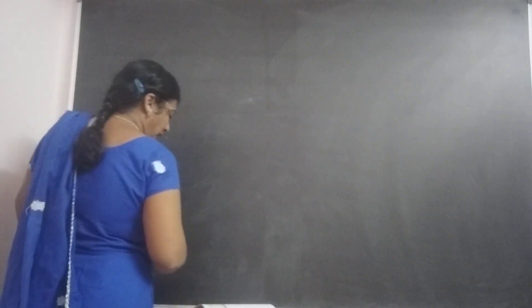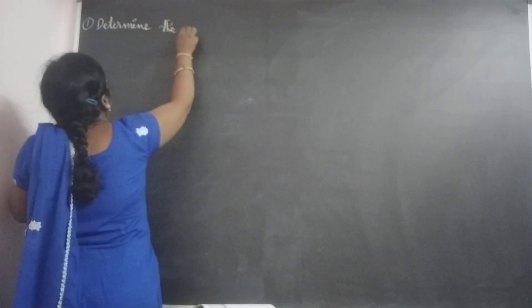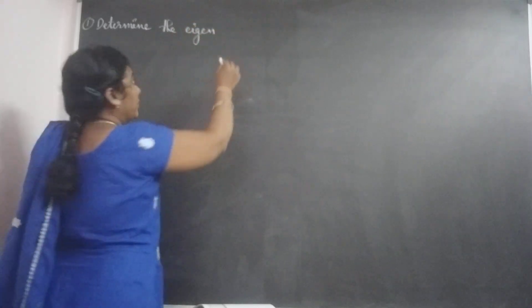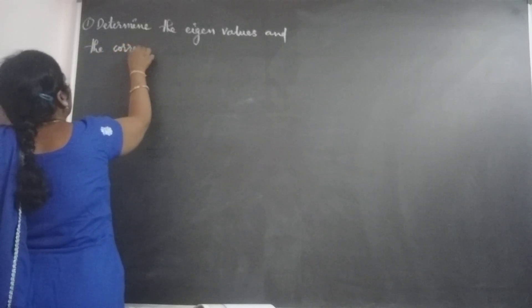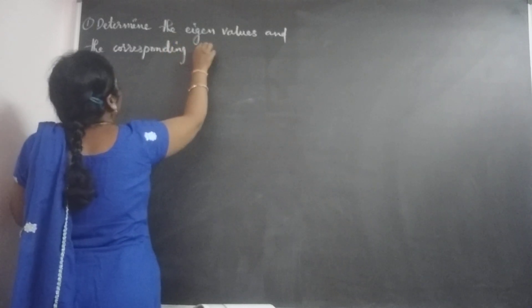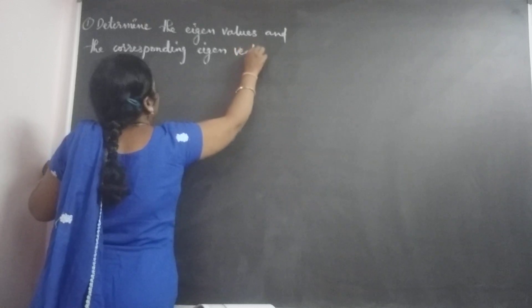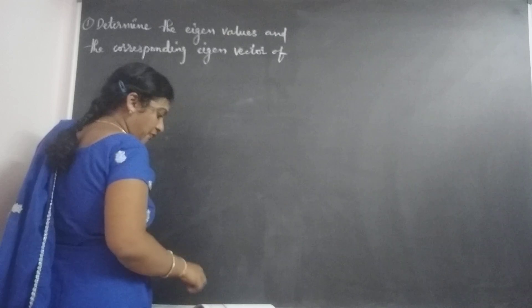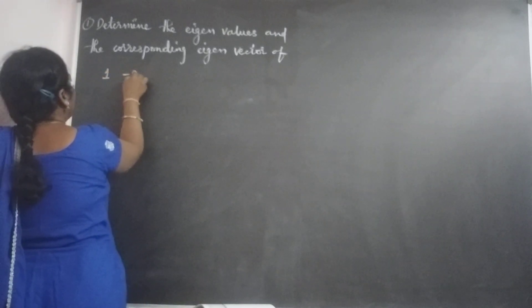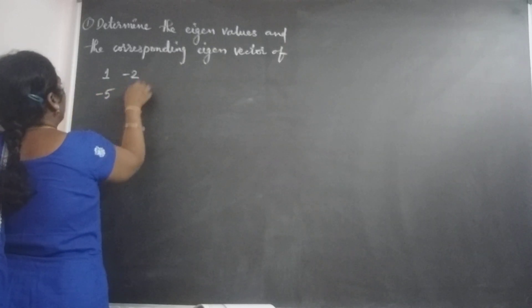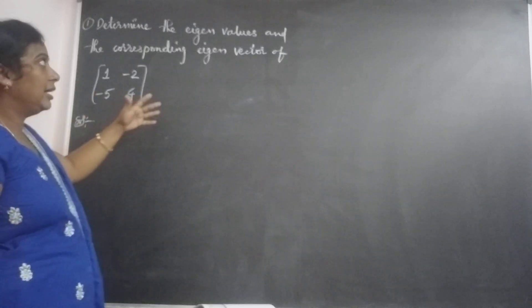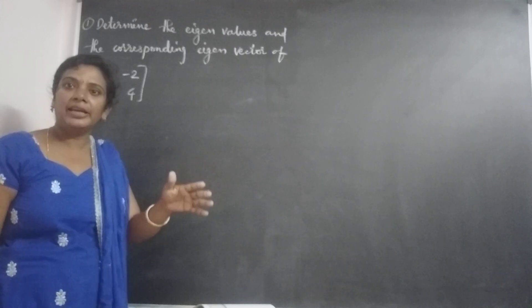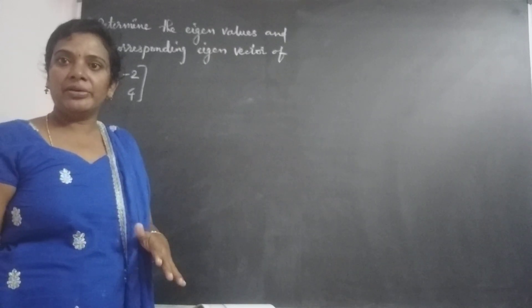The problem is: determine the eigenvalues and the corresponding eigenvectors of the matrix. The matrix is [1, -2; -5, 4]. So, how we can find out the eigenvalue and eigenvectors? In the earlier class we already discussed that we can find out the eigenvalue and corresponding eigenvector by using the characteristic equation.